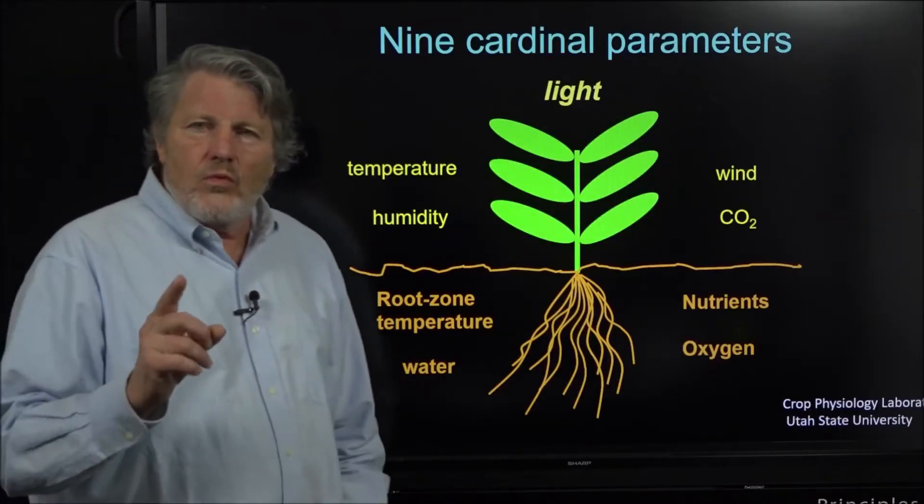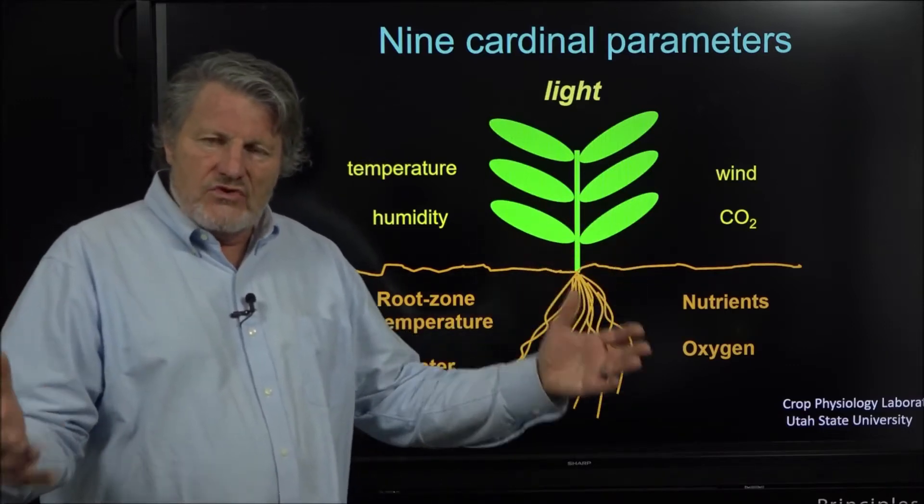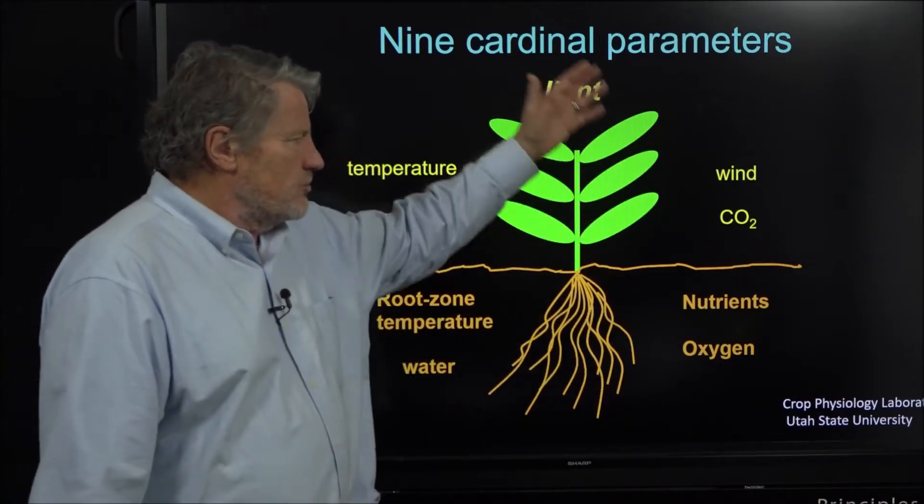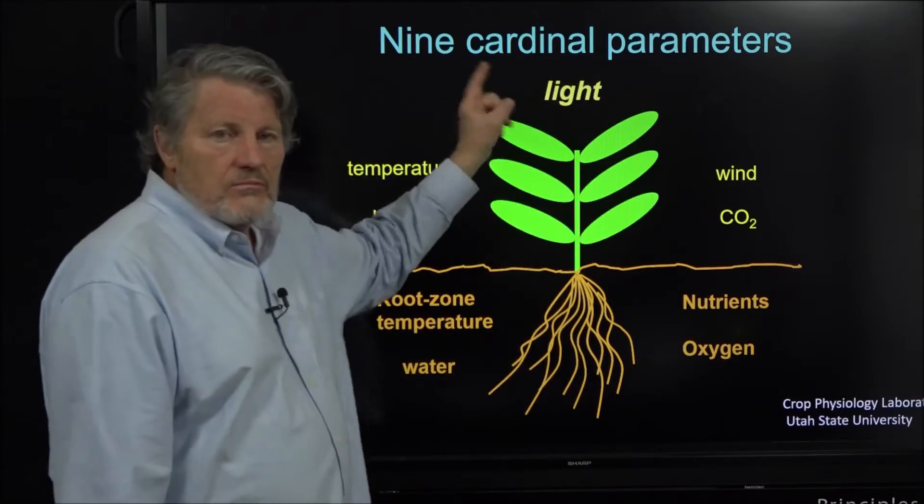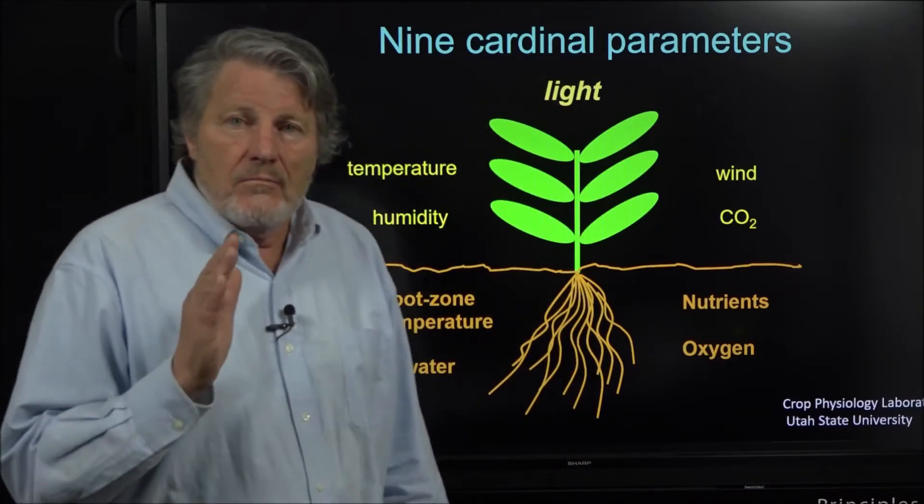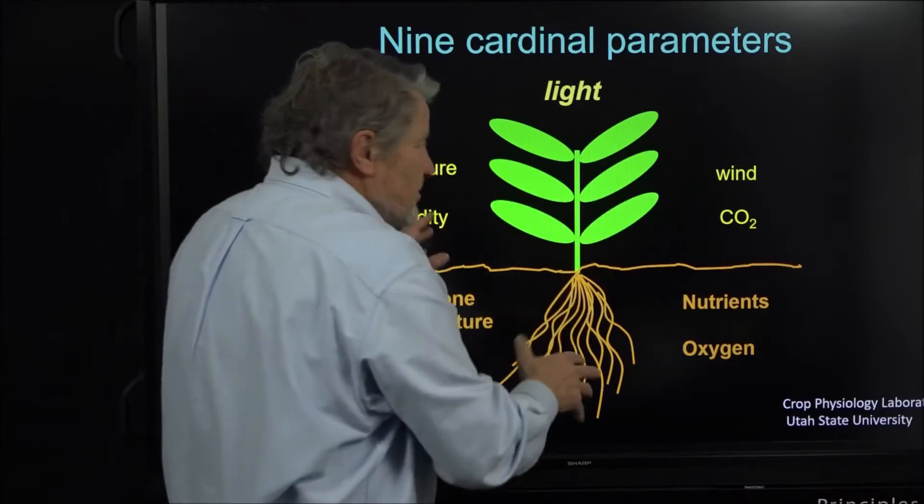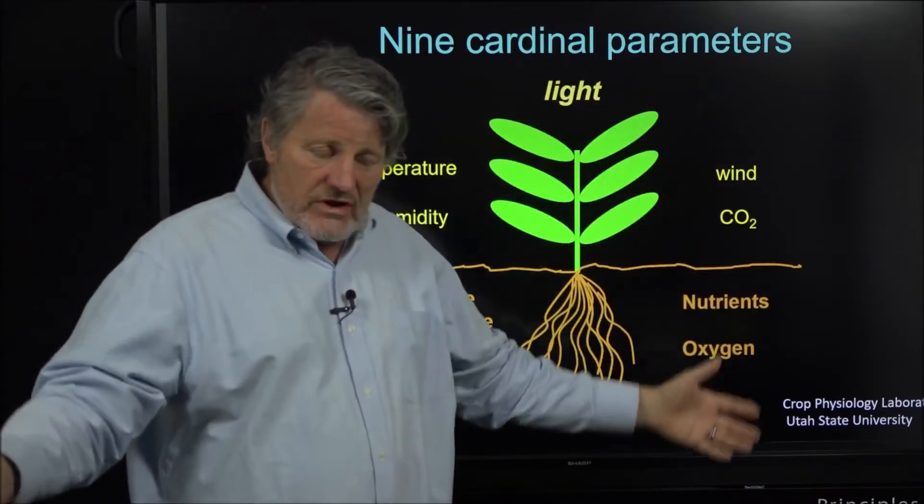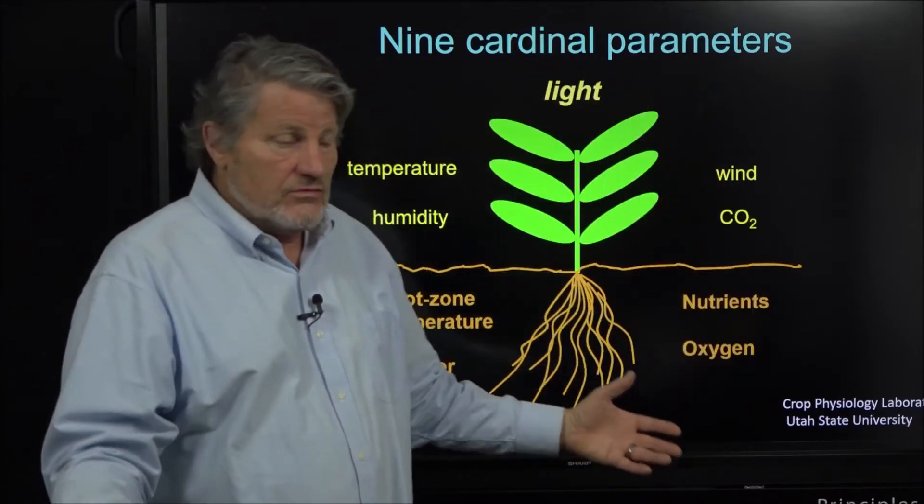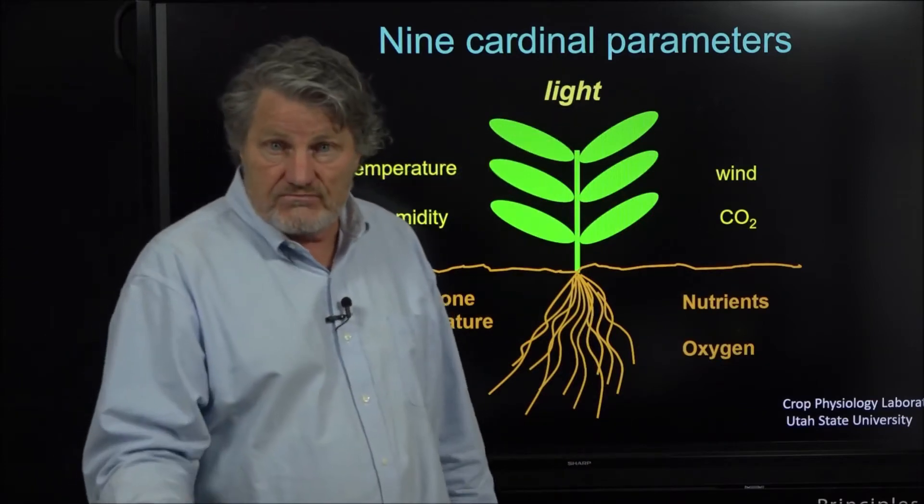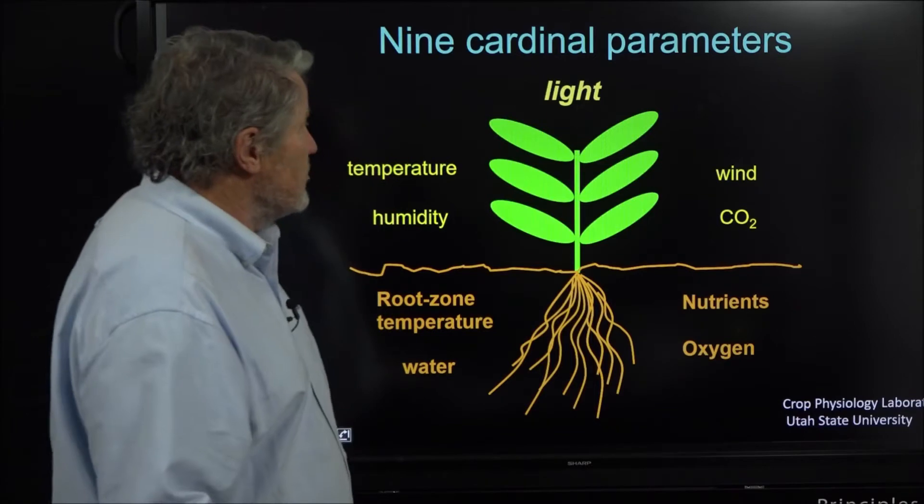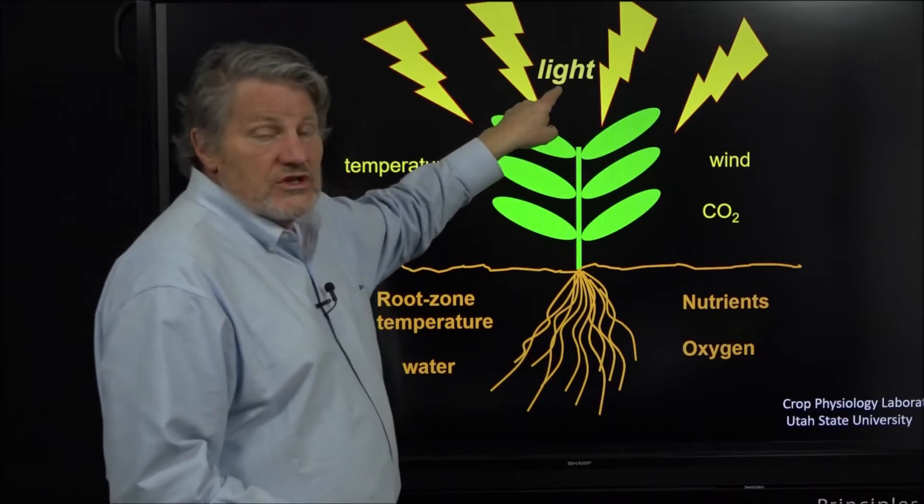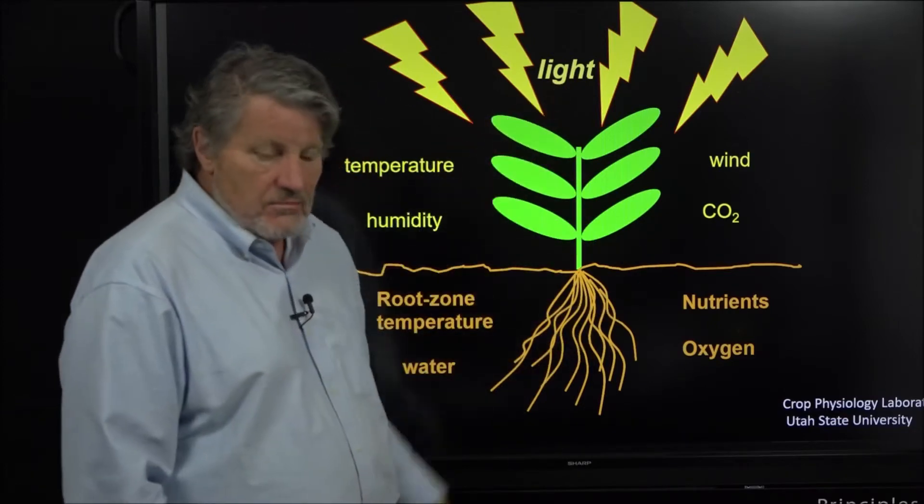We've talked about what things affect plant growth and we've talked about nine cardinal parameters. Here they are: temperature, humidity, root-zone temperature, nutrients, oxygen, wind, CO2, and light. Most of the time we're working to optimize these to use the given light that we have. For generations we haven't been able to change the light - we just optimize what we get from the Sun.